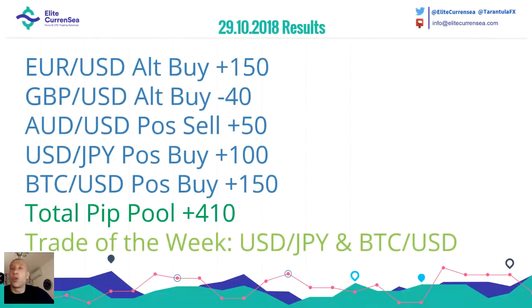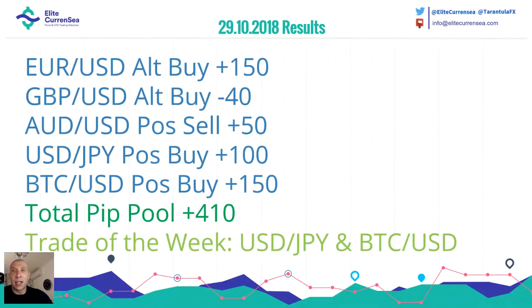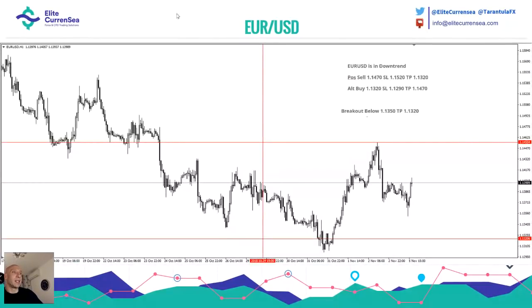Results for 29th of October — last week's results. 410 maximum pips. This isn't my result; this is a hypothetical result that could have been achieved if you follow these trading setups and ideas. The trade of the week: Dollar Yen and BTC/USD. This is the Euro dollar chart — this vertical red line represents the time of my webinar, always the same platform time.